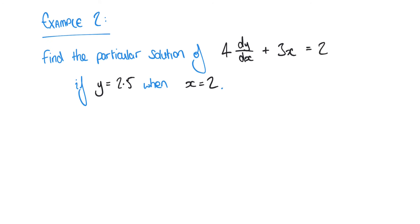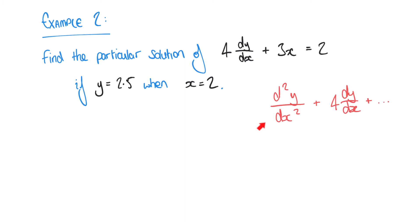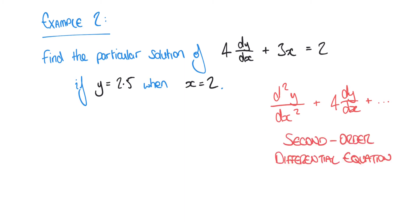Let's have a look at another example. In this case we have 4 dy/dx plus 3x equals 2. The two examples we've seen so far are what we call first order differential equations, because they involve the first differential dy/dx as part of the equation. If we also have the second differential d²y/dx² then that would be a second order differential equation, and we'll look at how to solve those in a later video.